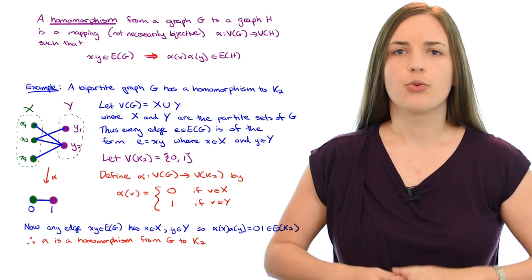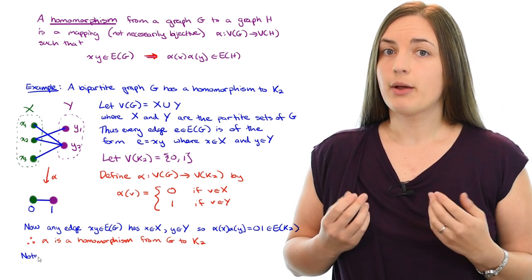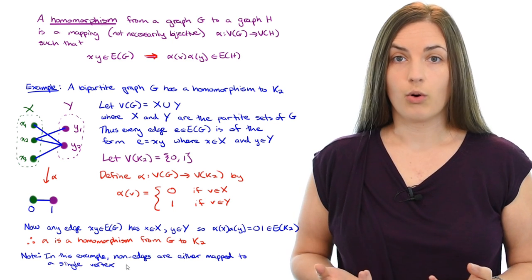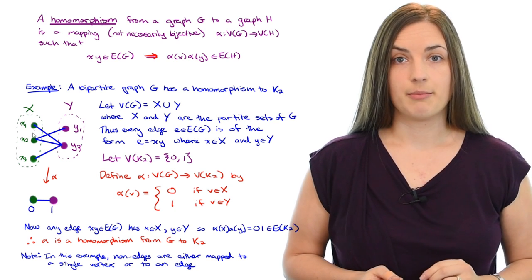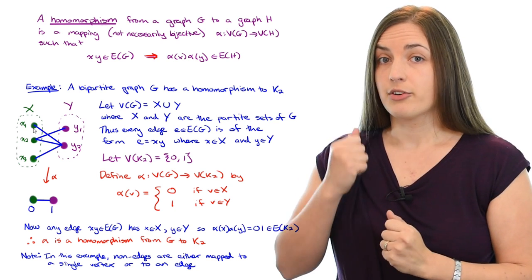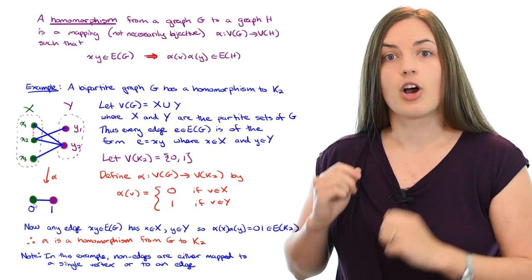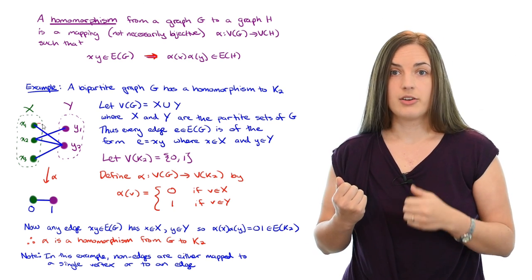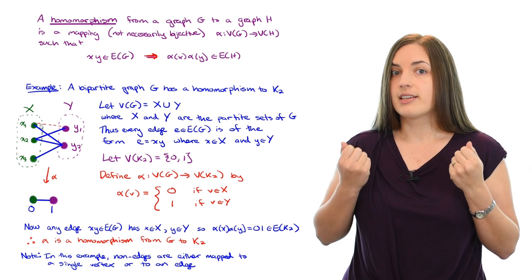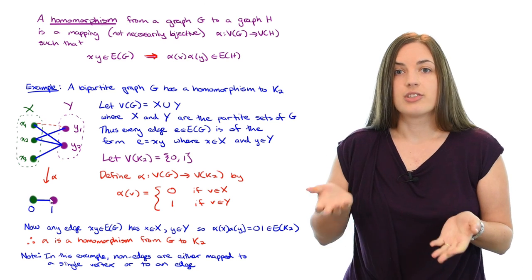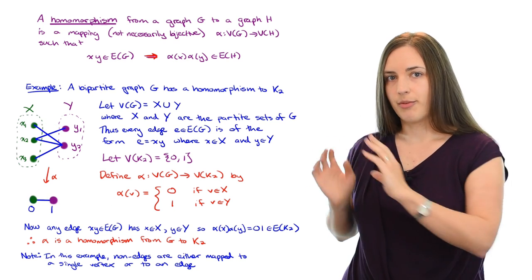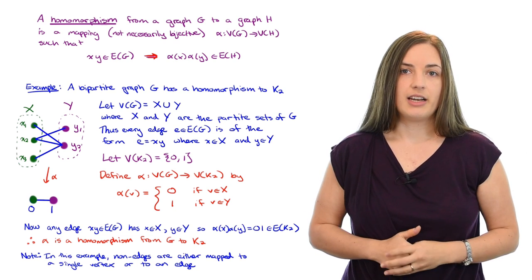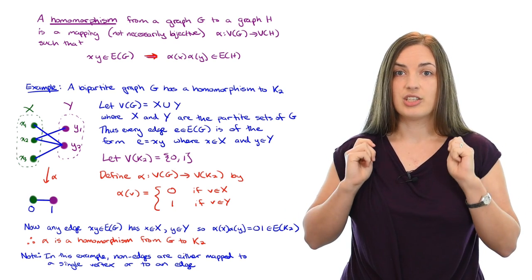As I mentioned, we don't really mind where non-edges get mapped to. So we might want to just note for ourselves that in this example, a non-edge will either get mapped to a single vertex or it will get mapped to an edge. Let me show you those two examples. So I'll highlight a non-edge where there's no edge between x1 and x2. And that non-edge got mapped to the single vertex 0. Now I'll highlight a different non-edge. The edge from x1 to y1 does not exist in the graph. And where does it get mapped to? It gets mapped to the edge 0, 1. So in this example, any non-edge from our graph G will either be condensed to a single vertex or mapped to an edge. And we don't care in either case. All that we needed to check was that edges get mapped to edges.